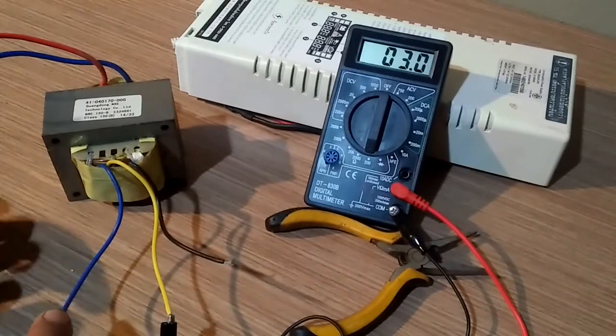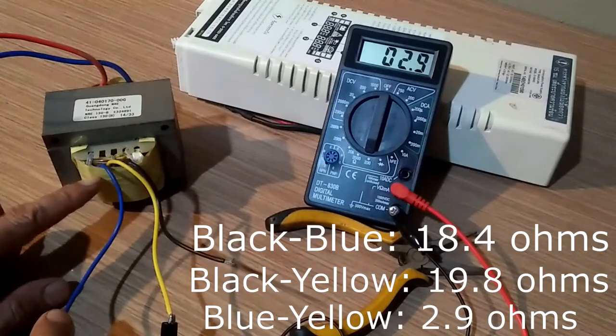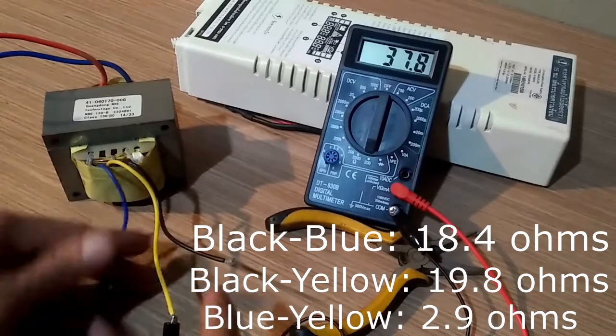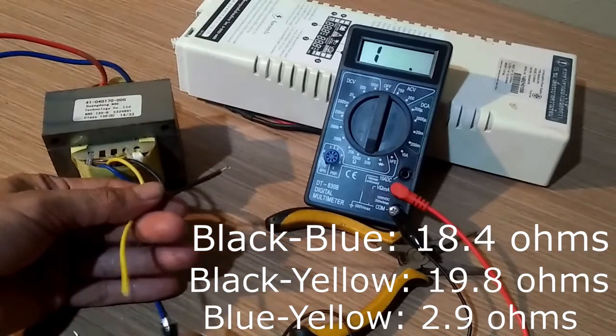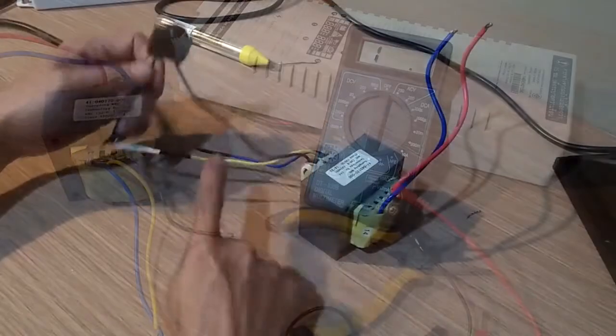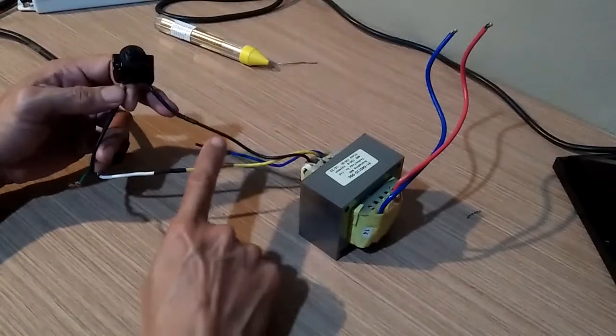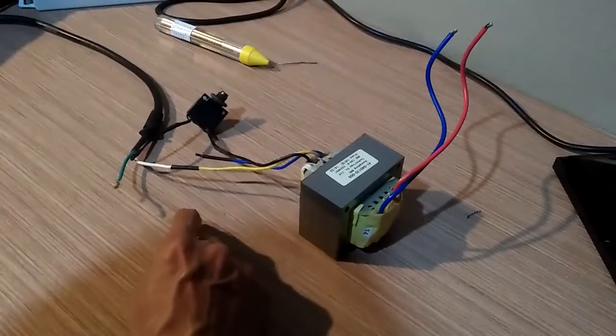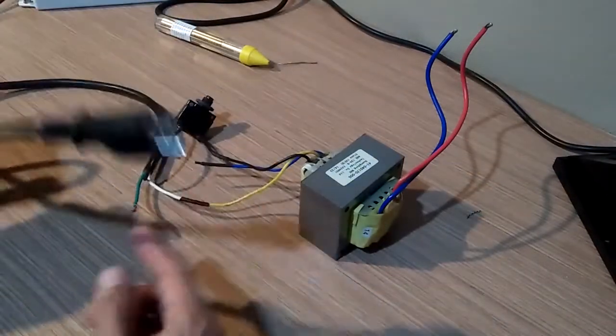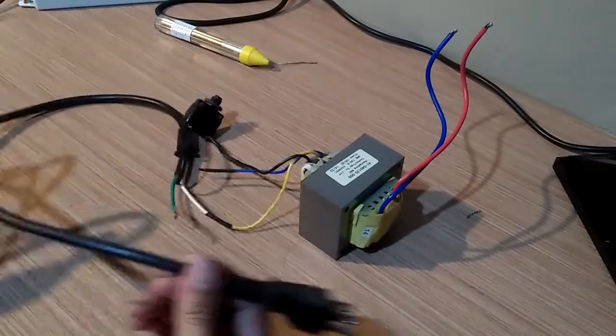As I expected, the resistance between the black and yellow wires have the highest resistance, so that is what I will use to connect to the 220 volt wall outlet. Now let's try to connect the UPS transformer to the 220 volt AC wall outlet. I just connected the black and yellow wire to the original power plug of the UPS and also included the original circuit breaker in series.